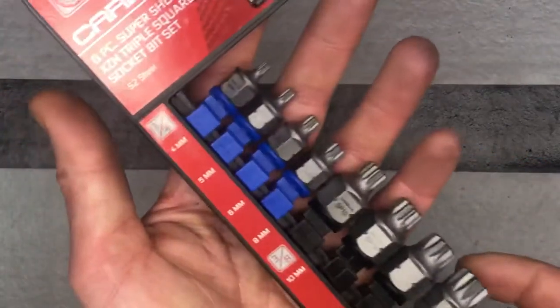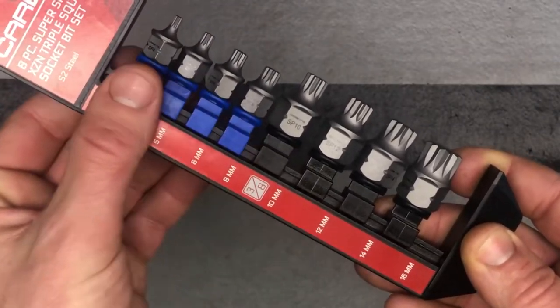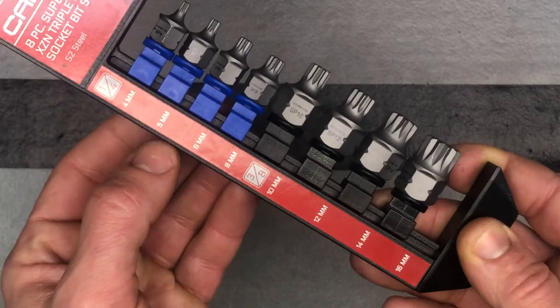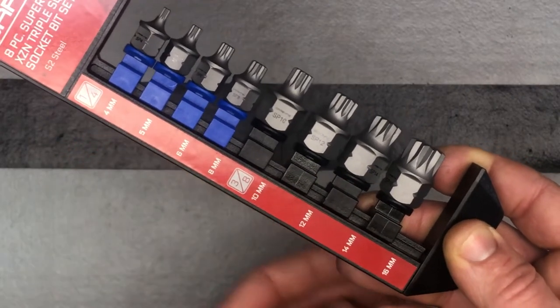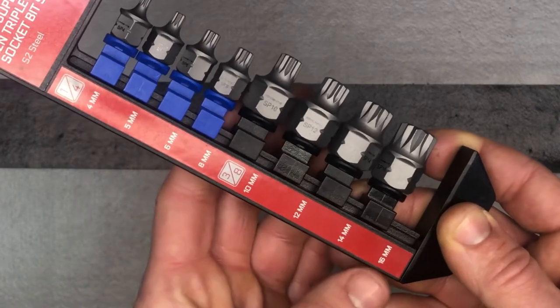Like I said, that hardened S2 steel - we've got four quarter-inch drive: four millimeter, five millimeter, six millimeter, and eight millimeter. And then we've got four three-eighths inch drives: 10, 12, 14, and a 16.